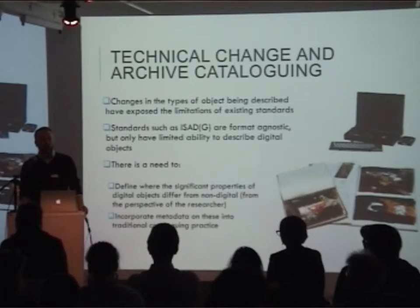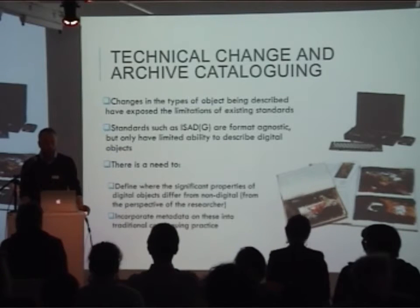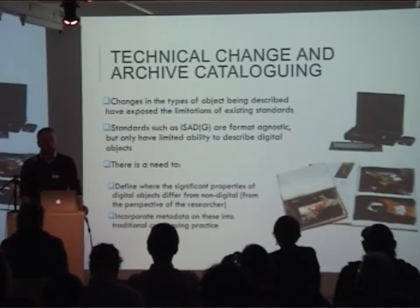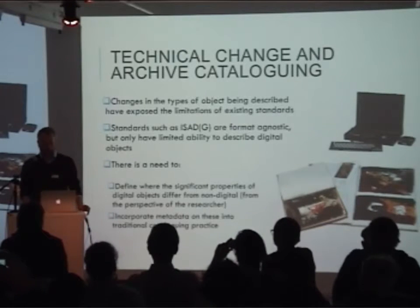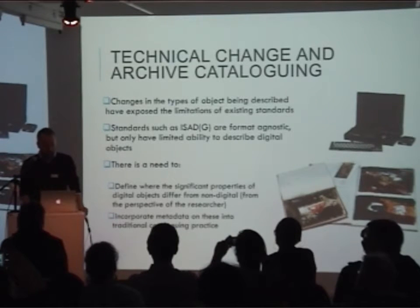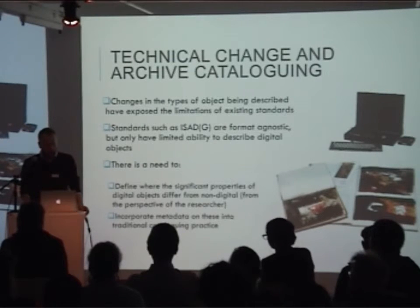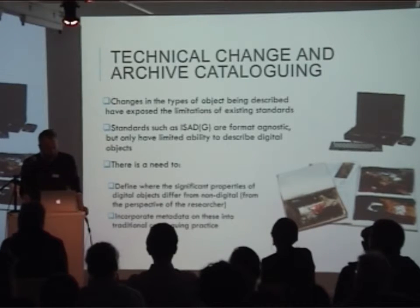The third use case that Tate is supplying to the Pericles project comes from Tate Archive. Current work at the archive within Pericles focuses on a set of issues surrounding the central challenge of the impact of technical change on archival cataloguing. This includes exploring challenges to a particular aspect of professional practice stemming from born digital material, and also an assessment of significant properties for archival digital objects, centred on a practical investigation looking at Archivematica. We are exploring three main ways in which technical change has affected archive cataloguing.